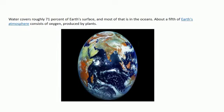Water covers the Earth 71 percent, the most of that is in oceans. About a fifth of Earth's atmosphere consists of oxygen produced by plants. Some amount of water is in the form of glaciers, ice caps, and in frozen condition.